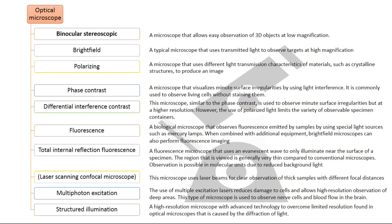Bacteria have a very small size and we cannot see them by the naked eye. For observing bacteria we use a microscope — an instrument for viewing objects that are too small to be seen by the naked eye. The most common type of microscope is optical, containing one or more lenses that produce an enlarged image of an object placed in the focal plane of the lens. The modern classification of microscopes is presented on this slide.